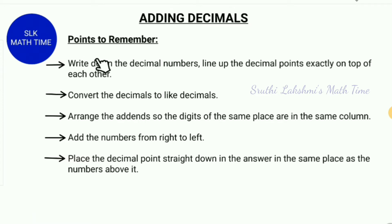First, we have to write down the decimal numbers one below another. And remember that we have to line up the decimal points exactly on top of each other. Next, we convert the decimals to like decimals. Then, we arrange the addends so the digits of the same place are in the same column. Then, we add the numbers from right to left as we would when we add normally. Then, we place the decimal points straight down in the answer line.